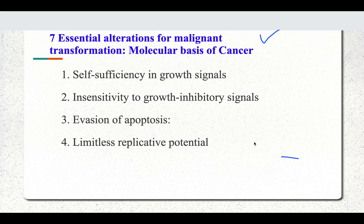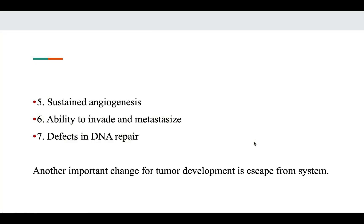As we discussed in the previous video, there are 7 essential alterations required for malignant transformation: self-sufficiency in the growth signal, where we studied oncogenes; insensitivity to growth inhibitory signals, where we studied tumor suppressor genes; evasion of apoptosis; limitless replicative potential; sustained angiogenesis; ability to invade and metastasize; defects in DNA repair; and the tumor should also escape from the immune system.